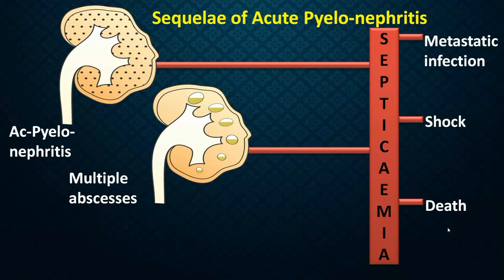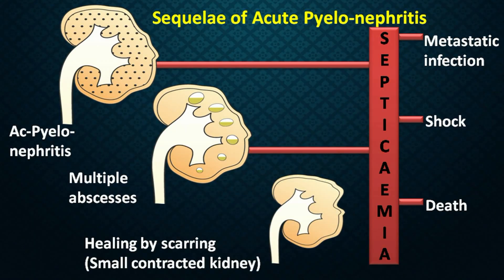Remember, friends — acute pyelonephritis is a potentially fatal condition. But most patients are fortunate: the infection gets resolved by treatment, and it heals by scarring. The sequela of scarring is that you get a small contracted kidney.